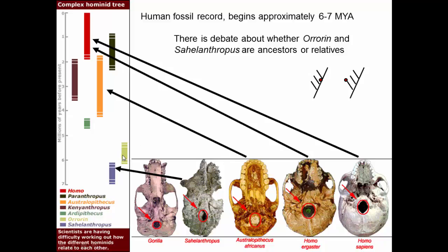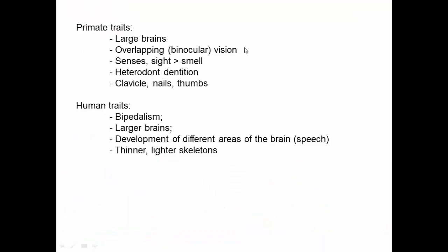Our skull is perched on a vertical spine. When we look at early fossils like Sahelanthropus, there's debate about whether they are direct ancestors on the lineage leading to modern humans or relatives of that lineage. The fossil record is sparse and not totally well resolved, but even if they are relatives of our ancestors, they are still indicative of what was happening early in human evolutionary history.